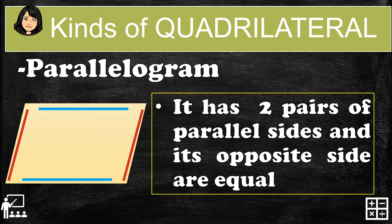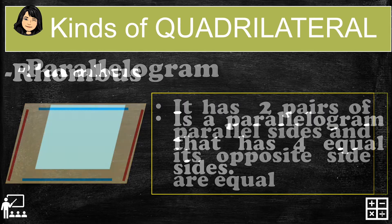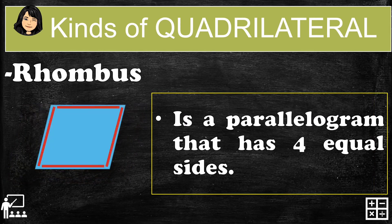Next, a rhombus. A rhombus is a parallelogram that has four equal sides. So all four sides are equal.